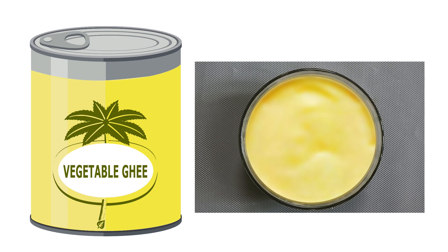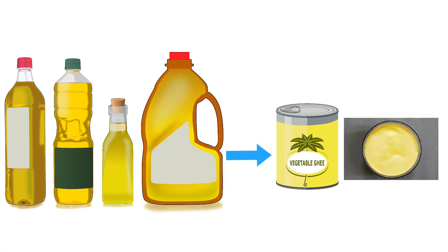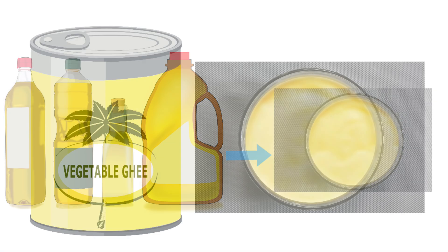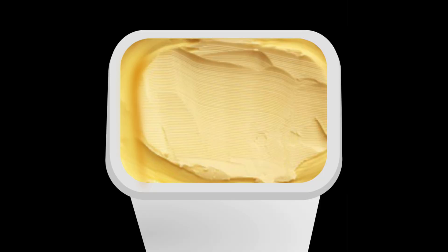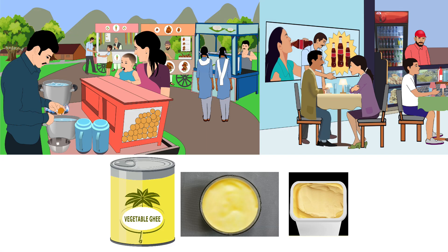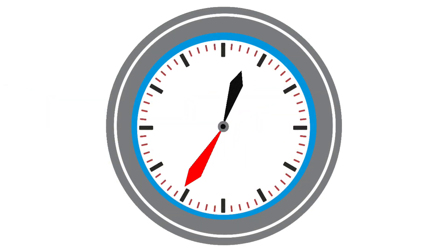Trans fatty acids are manufactured fats, produced by artificial hydrogenation of vegetable oils. In this process, double bonds in the fatty acid change from cis to trans, turning liquid oils into solid form. Examples of trans fats are vanaspati and margarine. Trans fats remain solid at room temperature. Many restaurants and fast food outlets use trans fat for cooking. These are added in processed and baked products such as cakes, biscuits and curry to get the desired taste and texture. They are inexpensive and last a long time.